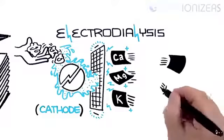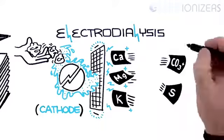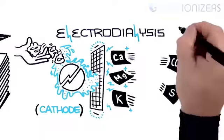Negatively charged ions, such as carbonate and sulfate, are drawn toward the positively charged plate, also known as anode.